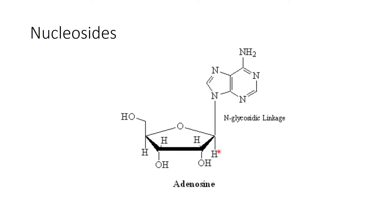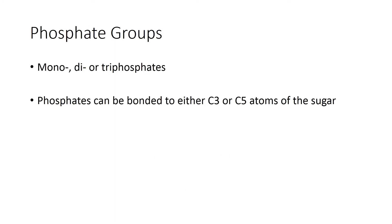When we have adenosine, the ribose sugar is attached to adenine. This is the structure of adenine and this is the structure of ribose. Next is the phosphate group — mono, di, or triphosphate. Phosphate can be bound to either the C3 or C5 atoms of the sugar.